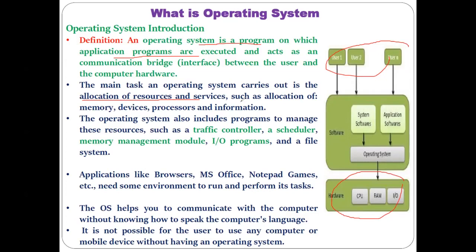The operating system is a collection of different software modules. There are different modules to conduct different functions: to keep track of process status, how many processes are currently executing, a traffic controller program, and a process scheduler to schedule the processes. When more than one process is waiting for execution, the scheduler chooses which process to execute — that scheduler program is part of the operating system.